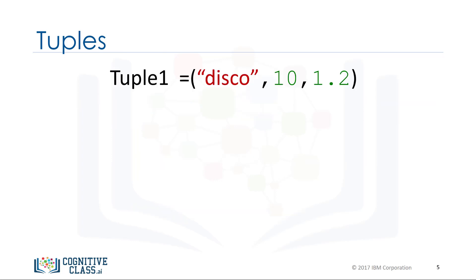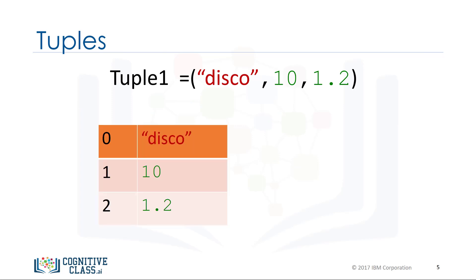Each element of a tuple can be accessed via an index. The following table represents the relationship between the index and the elements in the tuple. The first element can be accessed by the name of the tuple followed by a square bracket with the index number — in this case, zero.